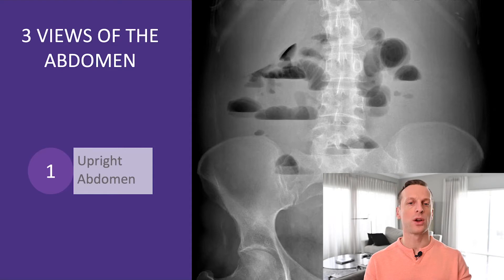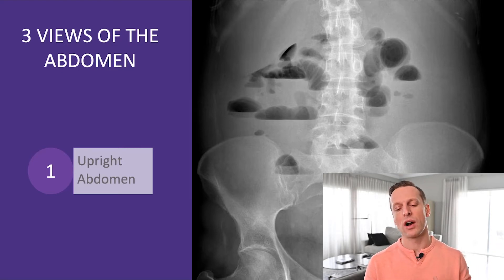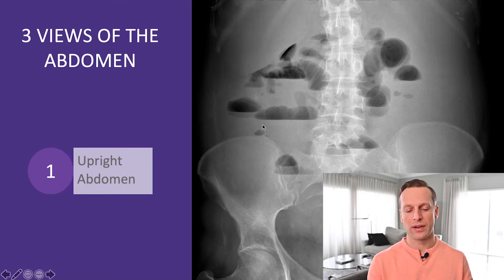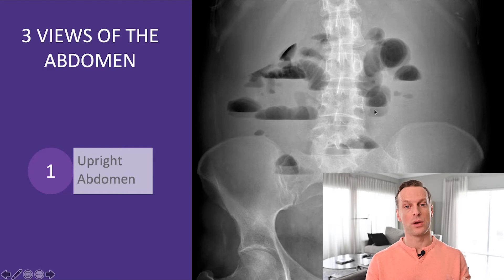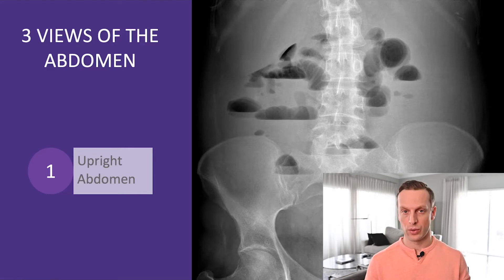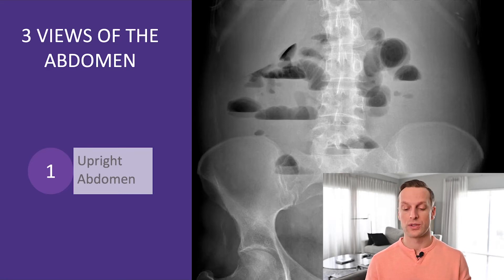Typically we say greater than three air-fluid levels is clinically significant, but I wouldn't get caught up on those numbers. Just notice that they have multiple air-fluid levels in parallel groups — you can see this group here is pretty parallel, this group here parallel, a few parallel groups here. That's very consistent with a bowel that's not moving fluid through anymore, and is very consistent with the diagnosis of a bowel obstruction.